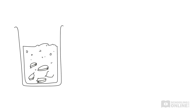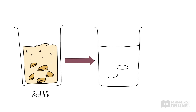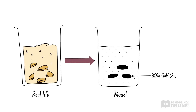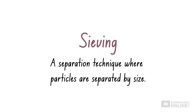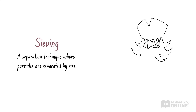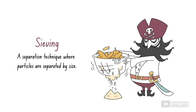In the HSC, you will be required to draw models of different mixtures. The pure substances in this mixture differ in size, so your model would show larger particles of gold mixed with smaller particles of sand. Like all mixtures, gold coins and sand can be physically separated. If Blackbeard wanted to collect his gold coins, he could sieve the mixture. Sieving is a separation technique where particles are separated by size. Blackbeard might use a sieve that has holes smaller than the gold coins but bigger than the sand particles. That way, the gold coins would collect in his sieve and the sand would fall to the ground.